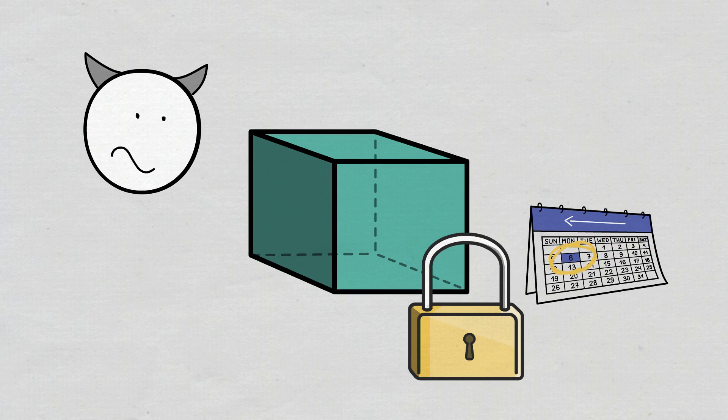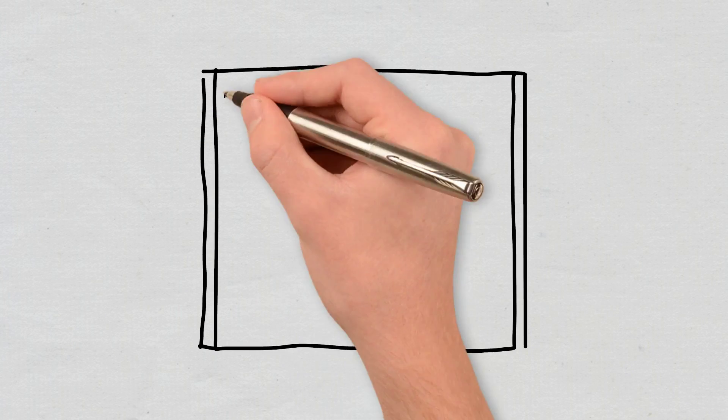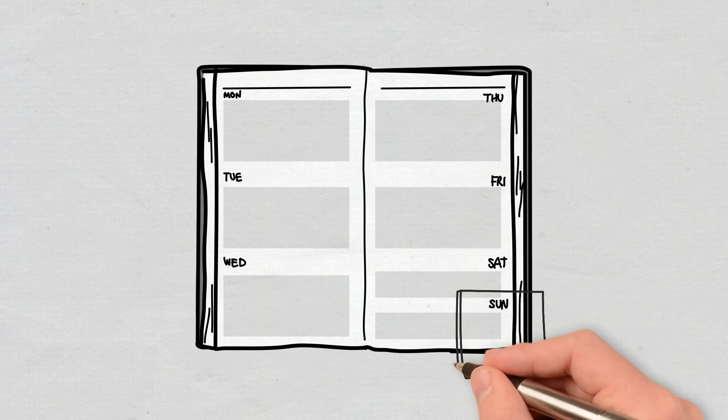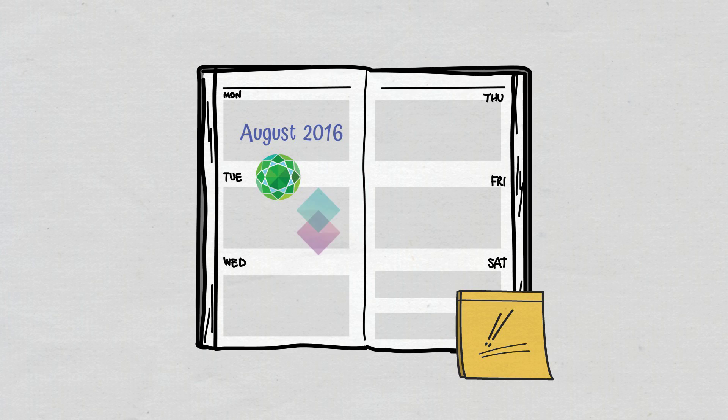Real-world examples of 51% attacks. In the past, a couple of blockchains have actually suffered 51% attacks. In August 2016, both Krypton and Shift, two blockchains based on Ethereum, experienced it.